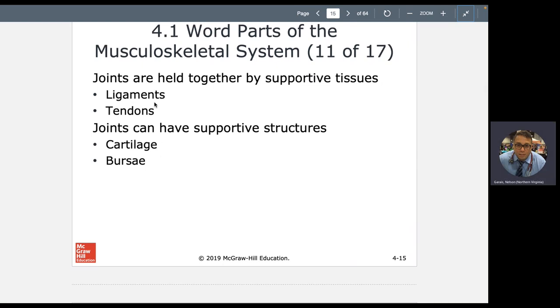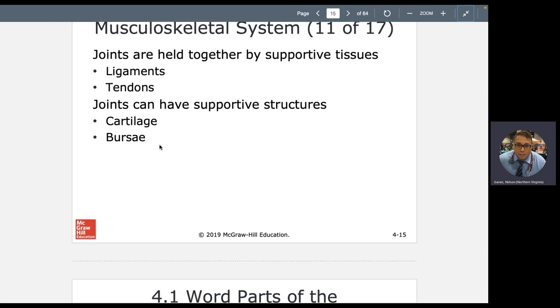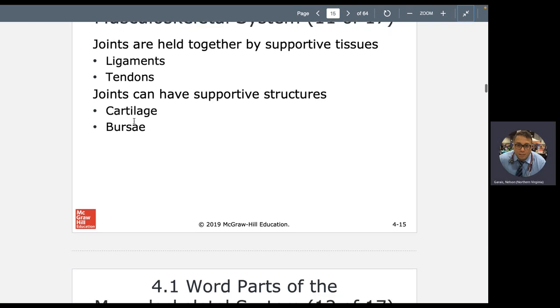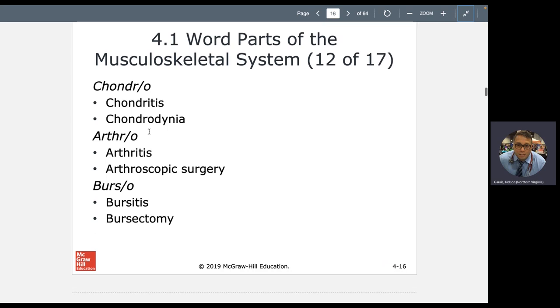Ligaments, tendon, cartilage, bursae. Your ligaments and tendons. Ligaments are connective tissue that connect bone to bone. Like your tibia and your fibula, the bones of your lower legs, they're connected together with this connective tissue called ligaments. And tendons connect muscle to bone. Cartilage is like bone, but it doesn't have the mineral deposits like calcium and phosphates in it that make it super hard. So cartilage is supportive and protective, but it is softer. Bursae are the pockets of synovial fluid or the fluid that makes your joints move freely and with less friction. So you can have chondritis and chondradinia, which is inflammation and infection of your cartilage and chondradinia, pain in your cartilage.